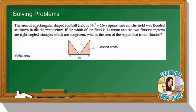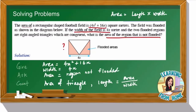The area of a rectangular shaped football field is 4x² plus 16x meters. The field was flooded as shown in the diagram below. The width of the field is 4x meters, and the two flooded regions are right angle triangles which are congruent. What is the area of the region that is not flooded?